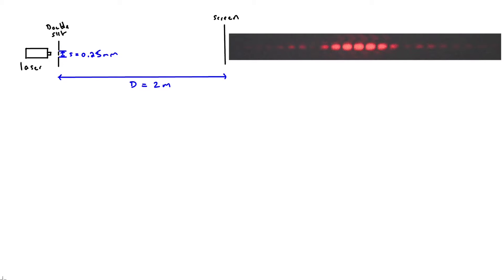When we perform the experiment with a red laser, which gives monochromatic light, we produce a series of equally spaced light and dark fringes on the screen. These are due to superposition, constructive and destructive interference. At the centre there is always a central maximum because light from each slit travels exactly the same distance and arrives in phase. The first subsidiary maximum occurs when light from one slit has travelled one wavelength further, putting it in phase again.